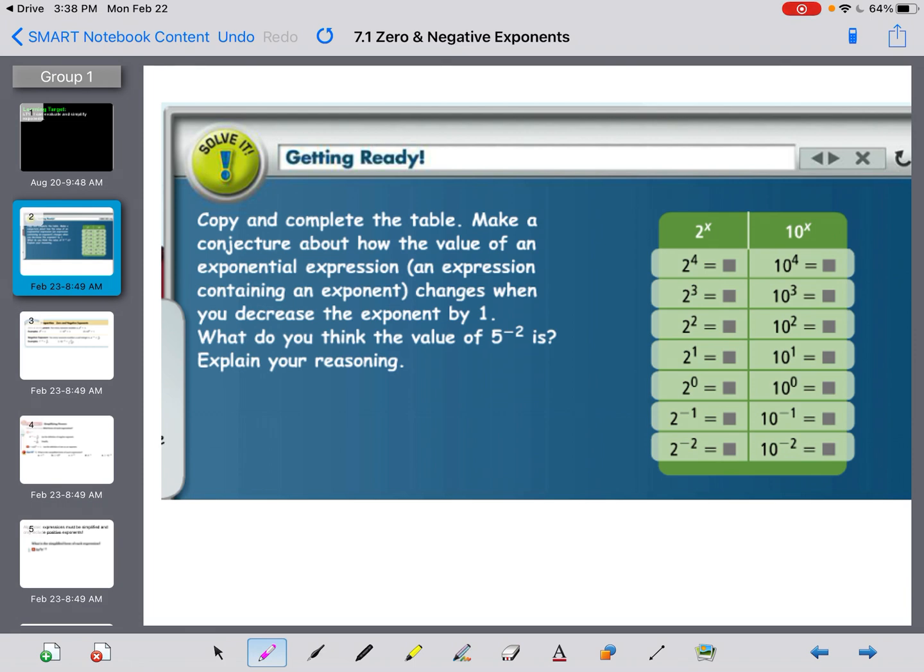So if I fill out this chart, 2 to the 4th remember means not 2 times 4, but it means I need to multiply four 2's together. So 2 times 2 times 2 times 2, which is 16. 2 to the 3rd power is 8, 2 to the 2nd is 4, 2 to the 1st is 2. 2 to the 0 power, this one may be new, is just 1. Anything to the 0 power is 1. 2 to the negative 1st is actually 1 over 2, and 2 to the negative 2nd is 1 over 4.